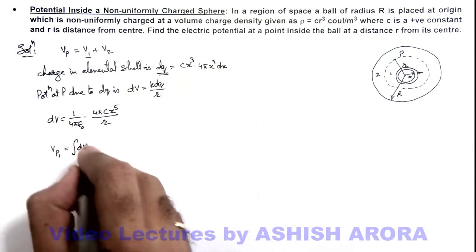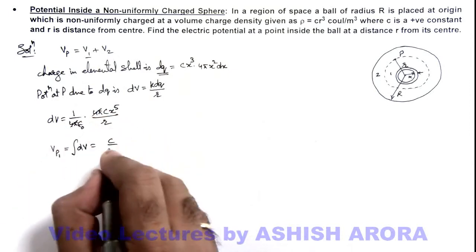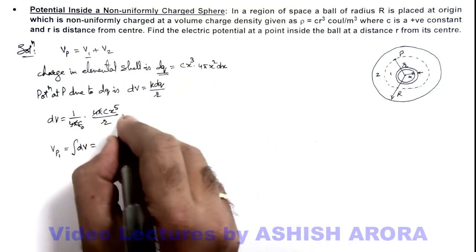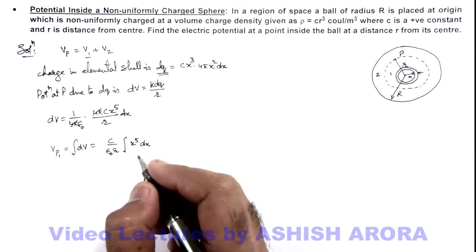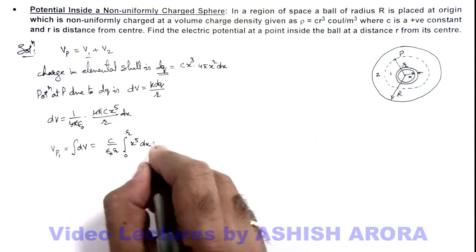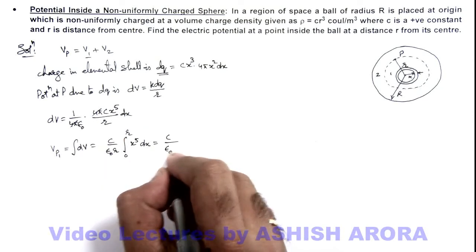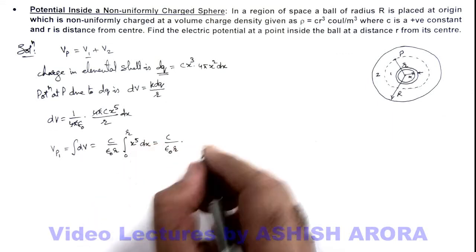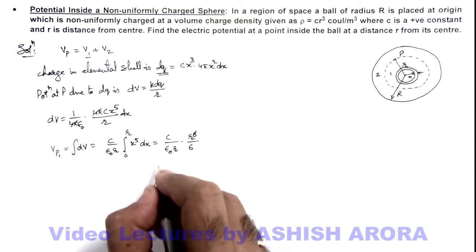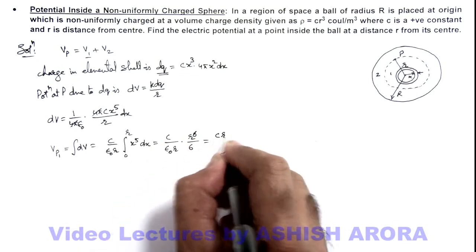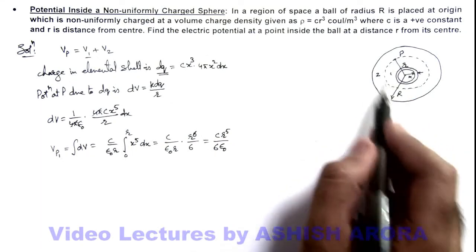Integrating from 0 to r, we get x⁶/6 evaluated at r, which gives r⁶/6. So V1 = cr⁵/(6ε₀), which is the potential due to the inner region at point P.